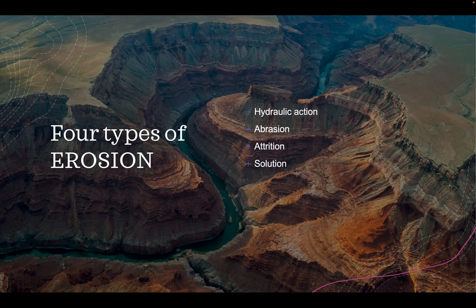First, erosion. There are four types of erosion: hydraulic action, abrasion, attrition, and solution. For your GCSE exams, it's absolutely crucial that you know these four and how they work. By the way, solution also appears in coastal transport — you'll see this in just a moment.